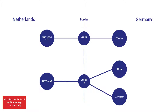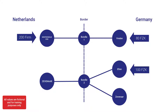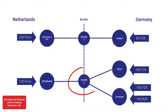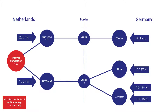The initial setup is as follows. At the first bundle, OGE uploads AT FZK to Vreden, GTS 200 firm to Winterswijk OGE. At the second bundle, OGE uploads 100 FZK to Elden, ThyssenGas 100 FZK and 100 BZK to Zevena, and GTS 120 firm to Zevena. This creates a competition, as both bundles compete for the internal capacity on the GTS side, which is 150.